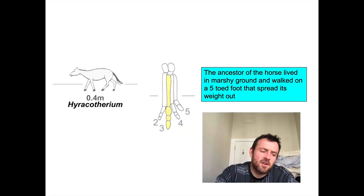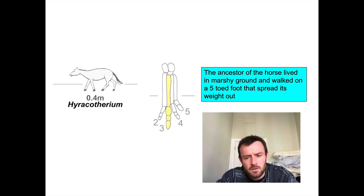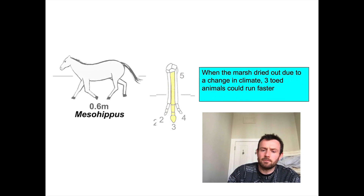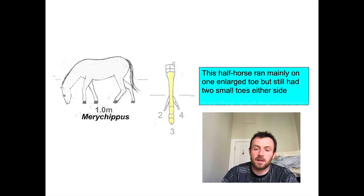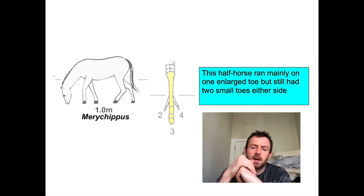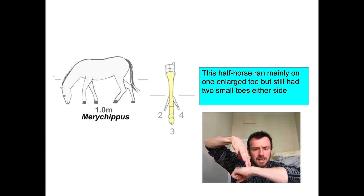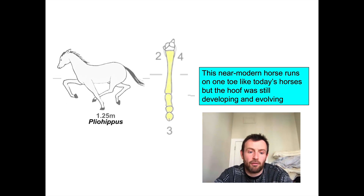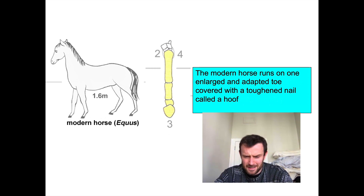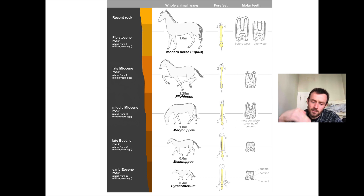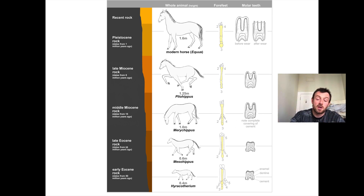Not only do we have fossils, but we find them in rock layers in an order. Here are a few stages in the evolution of the horse. Millions of years ago, the horse ancestor was called a hieropotherium and it had five toes that spread out on the ground. As marshes dried out due to climate change, it became faster to run on three toes. Faster animals survived and passed on their genes. Then horses started running on just one toe with two smaller toes either side. Eventually this single toe became a hoof, so today's modern horse is really running on one fingernail — very adapted over millions of years. When we look at the rock layers, we find fossils that tell us this information in a regular pattern, allowing us to chart the evolution of organisms through time.